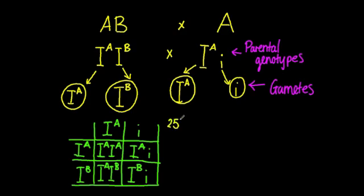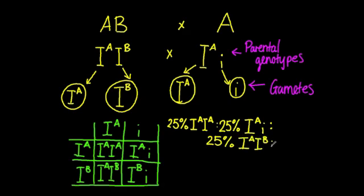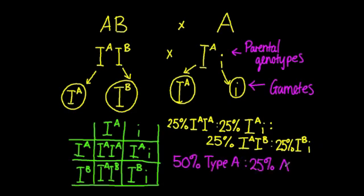However, from the genotypic ratio when you're producing the phenotypic ratio, you will see that there's actually a 50% chance of getting blood group A. Notice there were two genotypes for that - heterozygous and homozygous - 25% of blood group AB, and 25% blood group B.